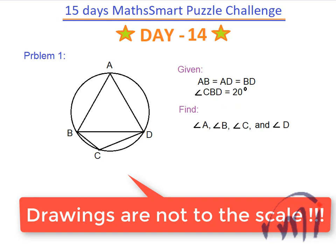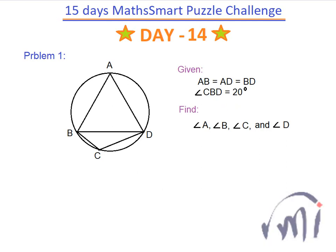We are given that AB is equal to AD is equal to BD. That means this side is equal to this side is equal to this side, which makes ABD an equilateral triangle. That means all these angles will be 60 degrees — this will be 60, this will be 60, and this will also be 60 degrees.